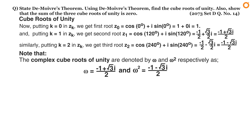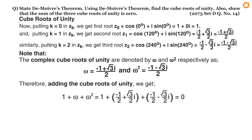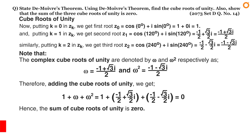To complete the answer, we add all three cube roots of unity to show their sum is zero. Therefore: 1 plus ω plus ω² equals 1 plus (−1 plus √3 i)/2 plus (−1 minus √3 i)/2, which equals zero. Hence the sum of the cube roots of unity is zero, confirming our result using De Moivre's theorem.